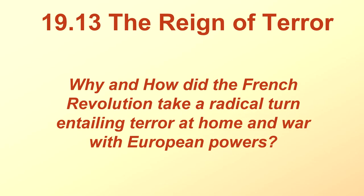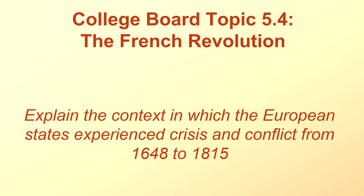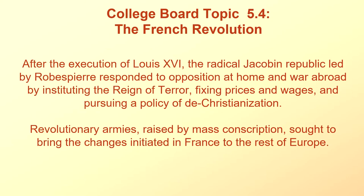This is lesson 1913, The Reign of Terror. Why and how did the French Revolution take a co-radical turn, entailing terror at home and war with European powers? It's a story we've already been telling. We've got College Board Topic 5.4, The French Revolution: explain the context in which the European states experienced crisis and conflict from 1648 to 1815.